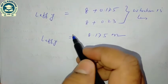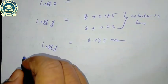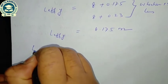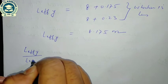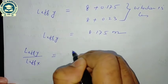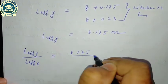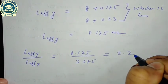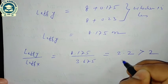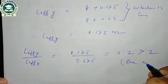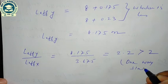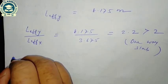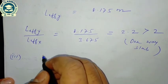Firstly, we have to check whether this slab is one-way or two-way. The ratio of Y to X direction is 8.175/3.675 = 2.2, which is greater than 2. So our slab is a one-way slab.